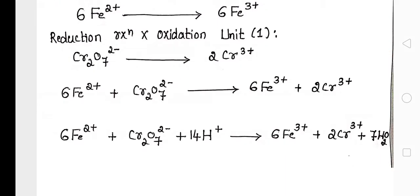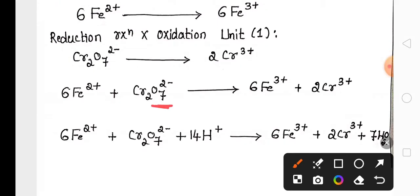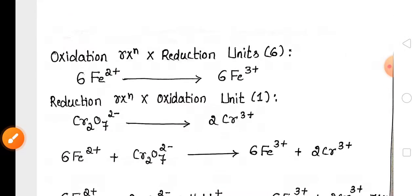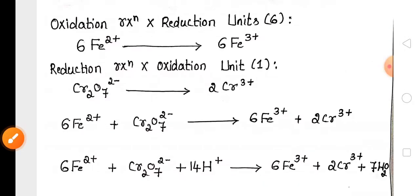To balance the 7 oxygen atoms on the product side, we add 7 water molecules on the product side. To balance the 14 hydrogen atoms, we add 14 H⁺ ions on the reactant side. This is how we balance the redox reaction by the oxidation number method.